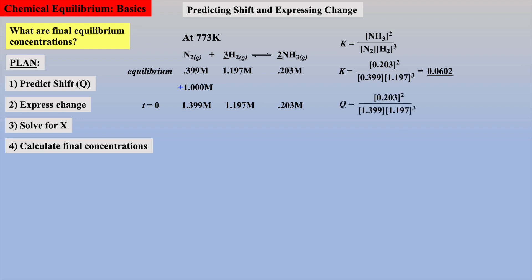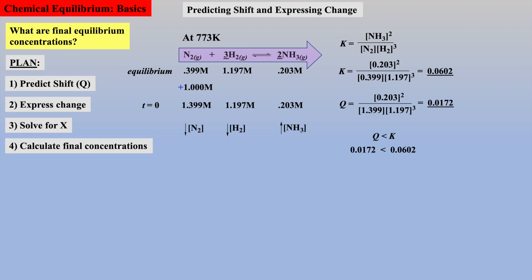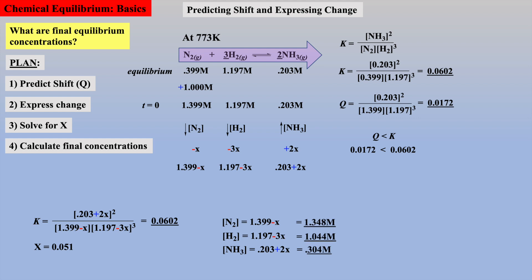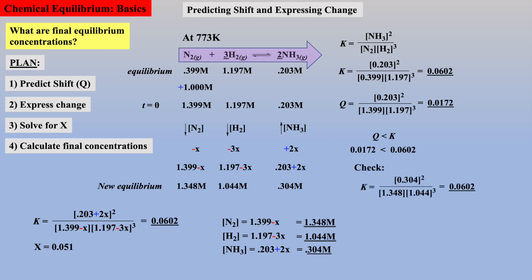First, let's calculate Q so we can predict shift, which is 0.0172. Q is less than K, thus we predict a shift to the right toward products, which equates to a decrease in reactant concentrations and an increase in product concentration. The changes — negative for reactants and positive for product — coupled with the stoichiometric coefficients and initial concentrations yield the final expression for change, which is substituted into the law of mass action to determine X and calculate equilibrium concentrations. These calculated concentrations match the experimentally measured equilibrium concentrations, and as a quick check, the correct value of K is also obtained with these new calculated equilibrium concentrations.